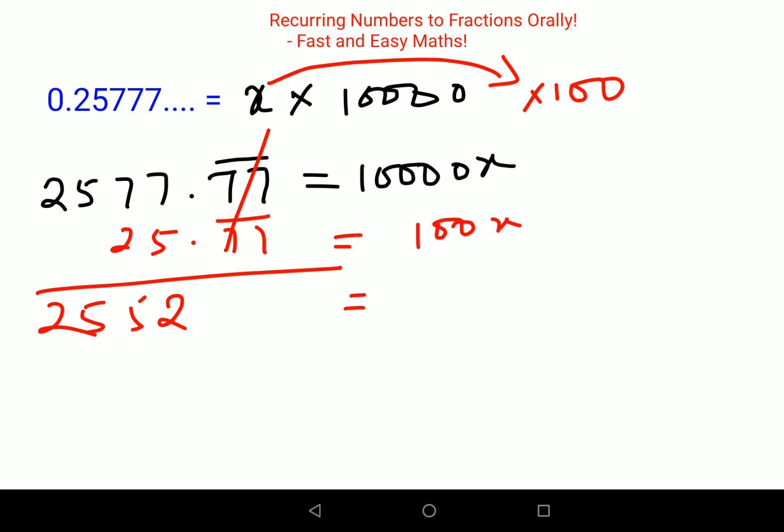This equals, we are getting 0, 0, then 99, so 9,900x. Now therefore I can say the value of x equals, that is not the numerator, the numerator is 2552 upon 9,900.